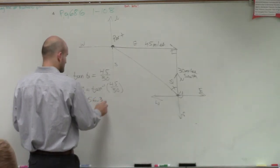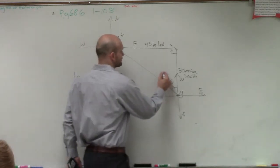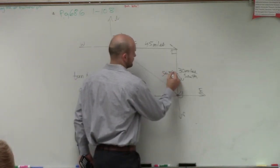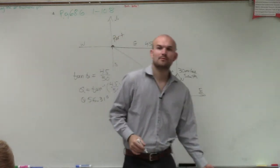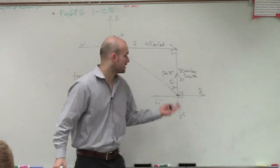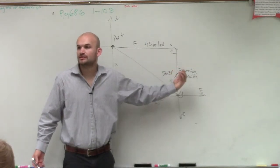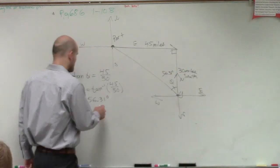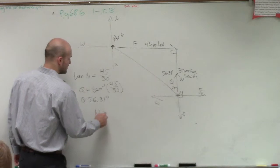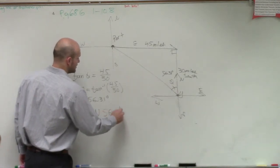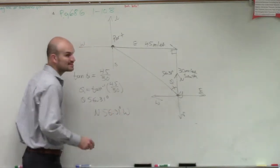Actually 56.31 degrees. So remember when we're talking about the bearing, the first thing we want to do is tell you you're going to go north 56.31 degrees west. So my bearing is going to be north 56.31 degrees west back to port.